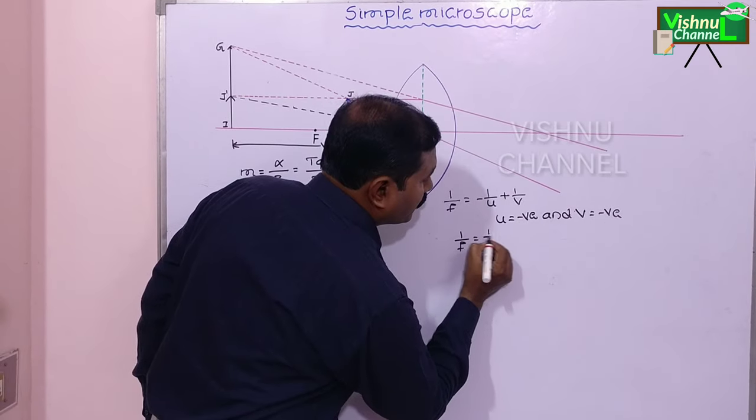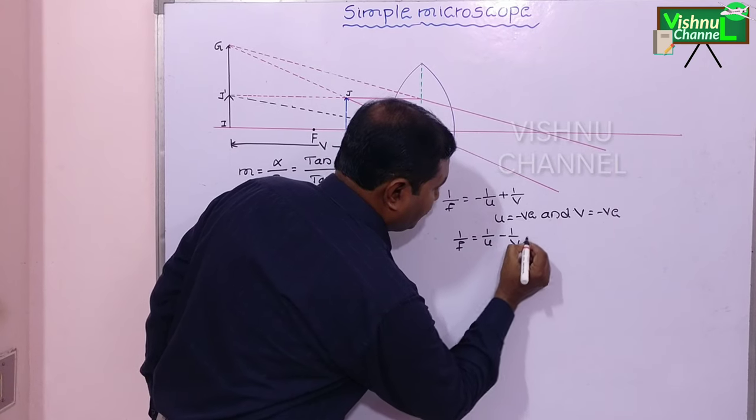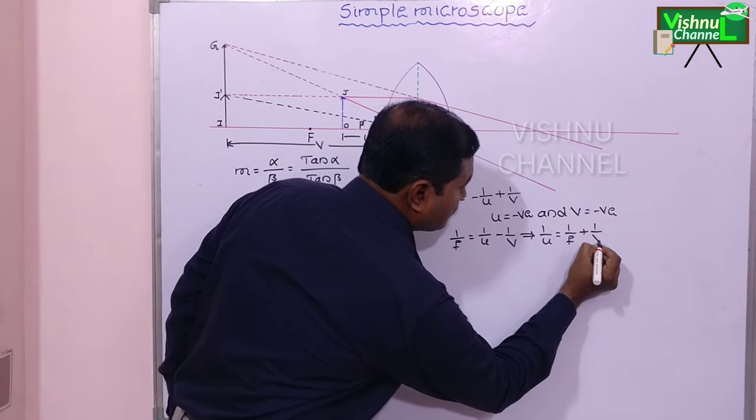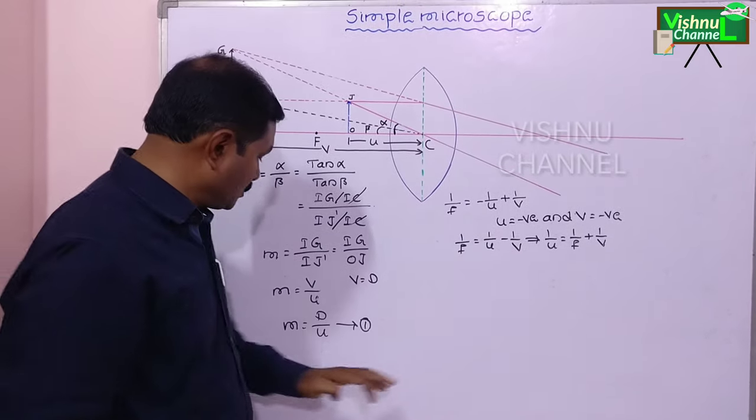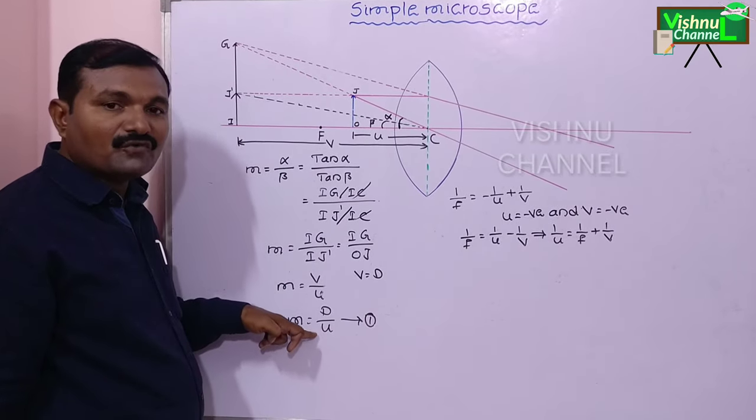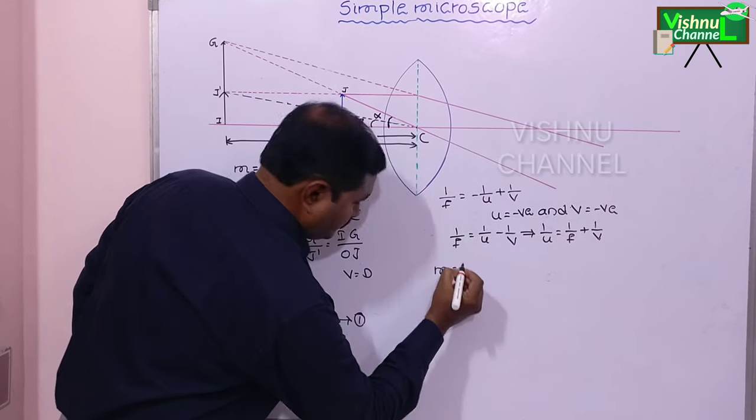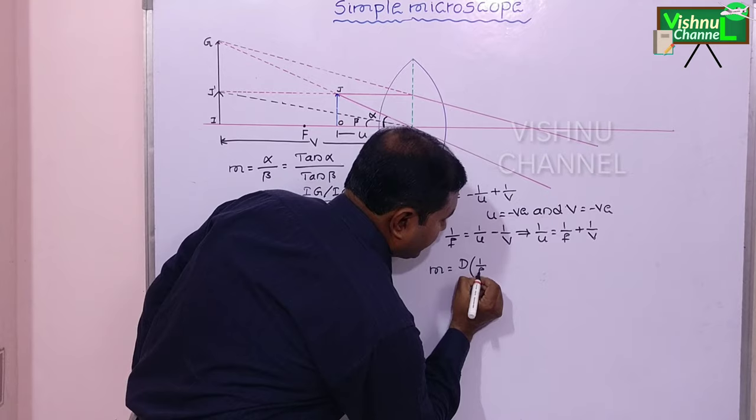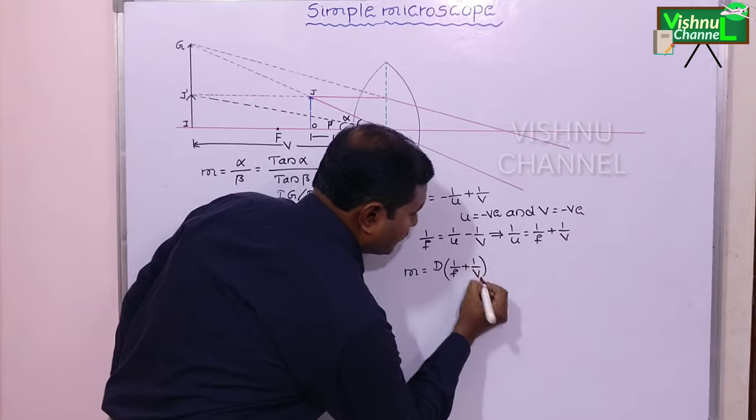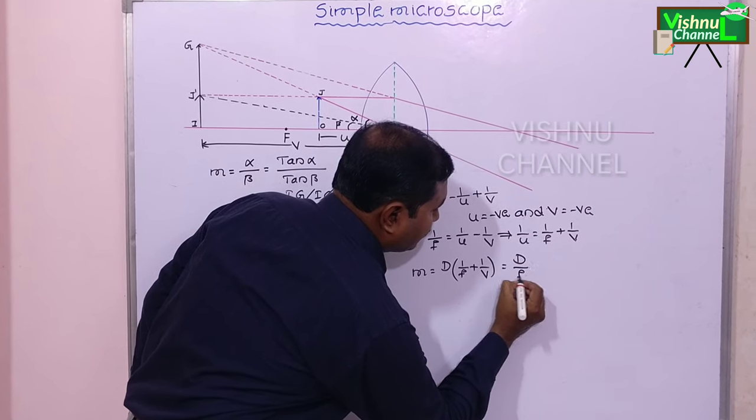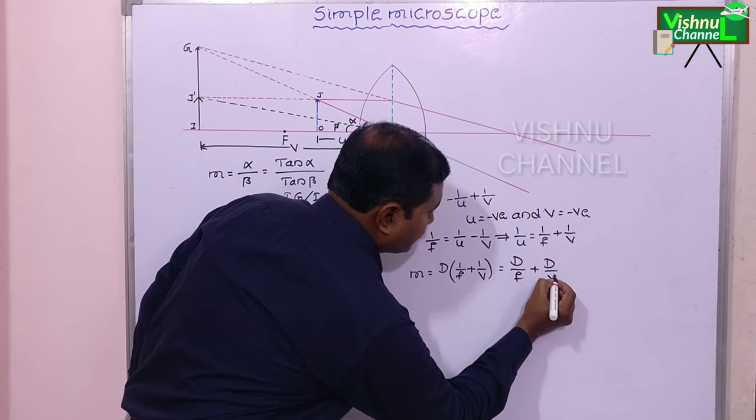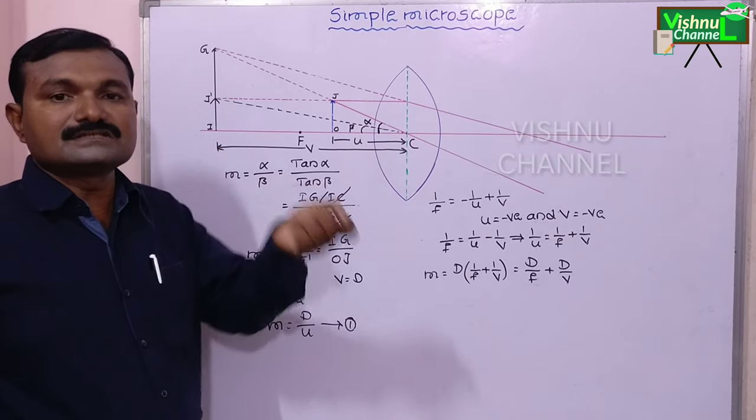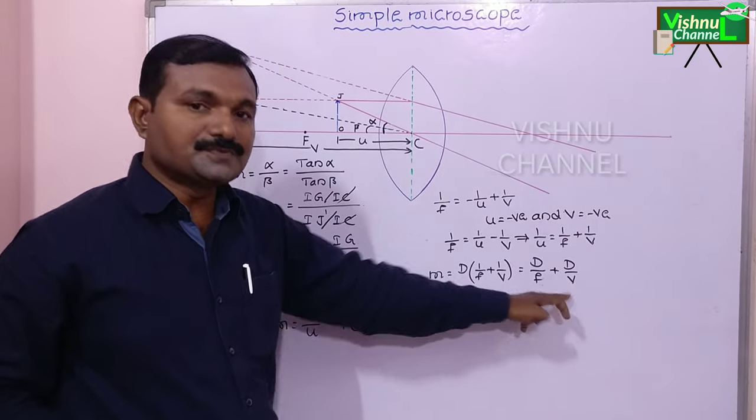From this equation, 1 by u equal to 1 by f plus 1 by v. We substitute this value in equation 1 in place of 1 by u. So m is equal to d into 1 by u equal to 1 by f plus 1 by v. This is equal to d by f plus d by v.